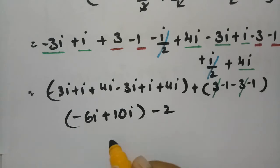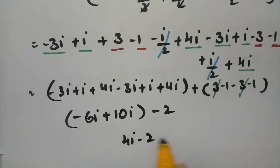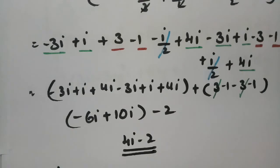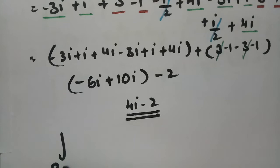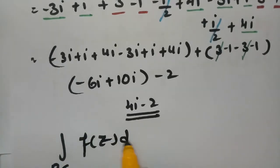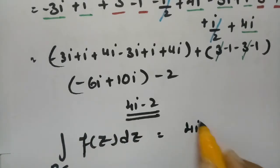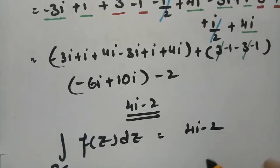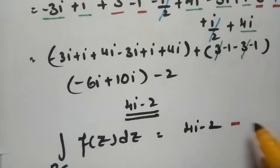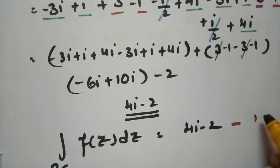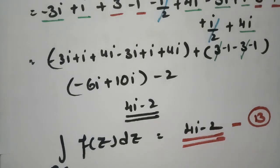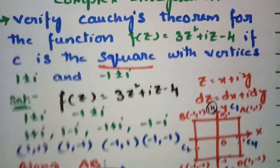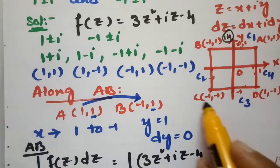Therefore the integral along BC (curve C2) equals 4i - 2. This is value B. So along BC we have completed the calculation with result 4i - 2.